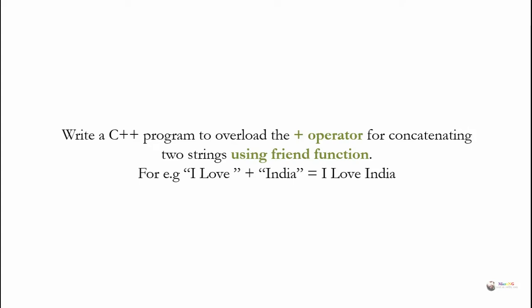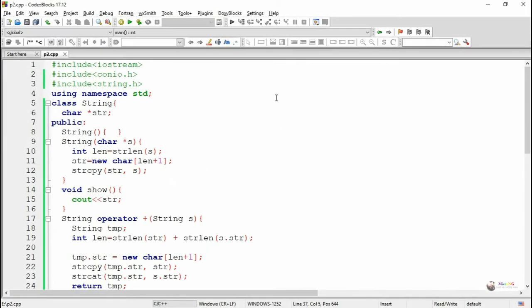This program overloads the plus operator for concatenating two strings using a friend function. For example, the first string is 'I love' and the second string is 'India', and they should be concatenated into 'I love India'.